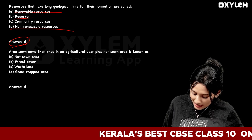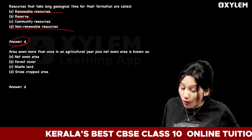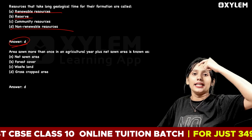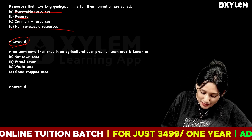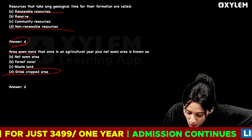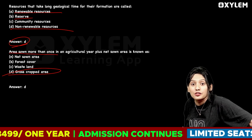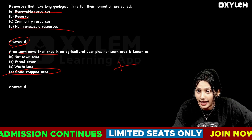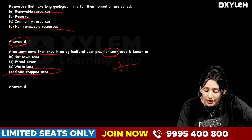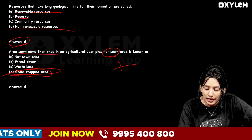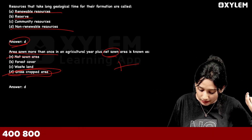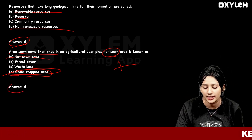Next question: areas sown more than once in an agricultural year, plus net sown area, is known as what? The answer is gross cropped area. Option D is the correct answer.